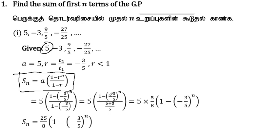Substituting: 5 into 1 minus (-3/5) to the power n, divided by 1 minus (-3/5). That gives 5 into (1 minus (-3/5)^n) divided by (5+3)/5, which is 8/5. Simplifying: 25 by 8 into 1 minus (-3/5) to the power n.